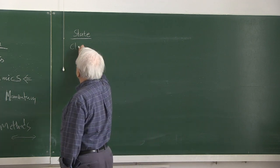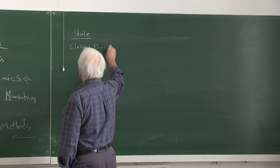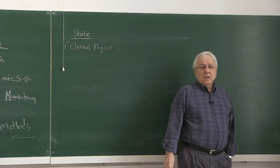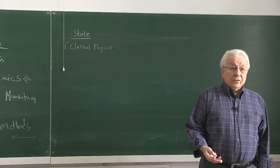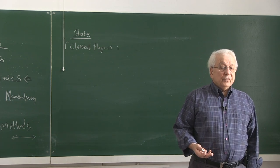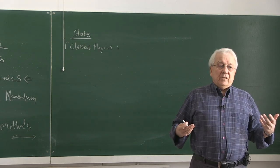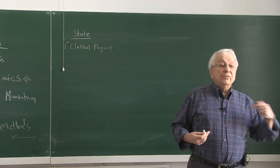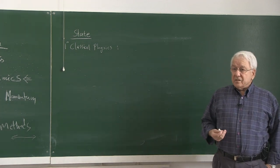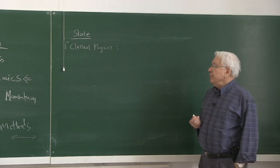Let's start with classical physics. How do we define the state in classical physics? I ask that question because if you're going to talk about the concept of state in quantum theory, you have to decide whether it's a new concept you have to generate, or was there a concept like that in classical physics which you had to modify. A concept of state exists in classical physics, but needs to be modified.